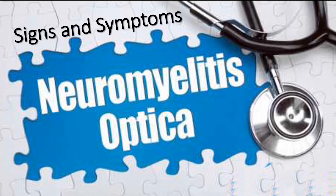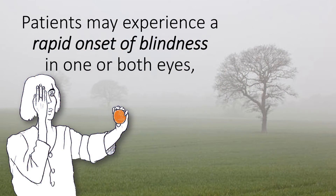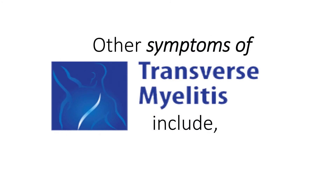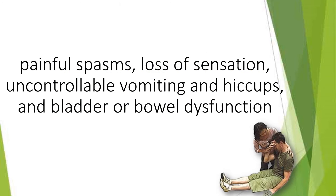Signs and Symptoms: Patients may experience a rapid onset of blindness in one or both eyes, followed within days or weeks by varying degrees of paralysis in the arms and legs. Other symptoms of transverse myelitis include painful spasms, loss of sensation, uncontrollable vomiting and hiccups, and bladder or bowel dysfunction.